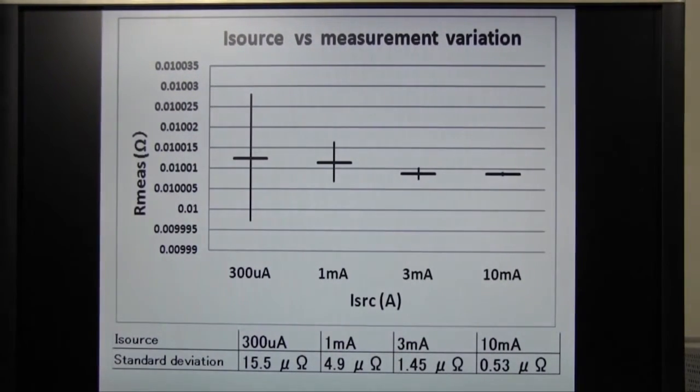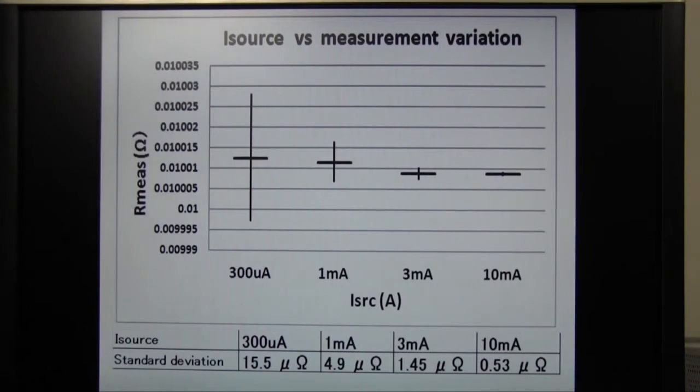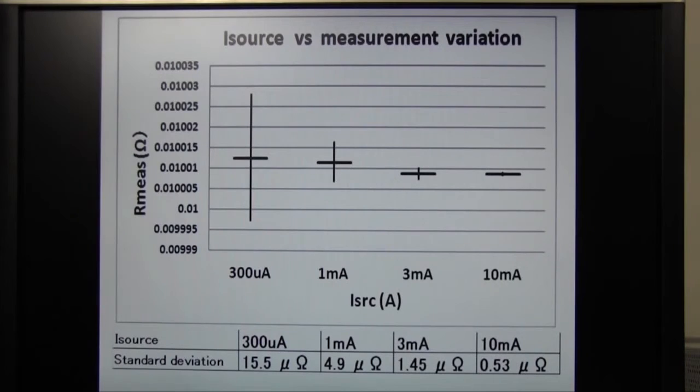This is a measurement result of 4 different force currents. The vertical bar shows the standard deviation. It shows that the standard deviation gets smaller when forcing a large current. You can set the best force current regarding the noise and the damage of the device.